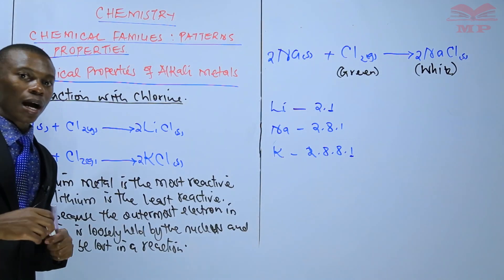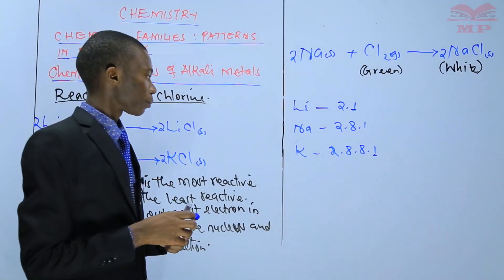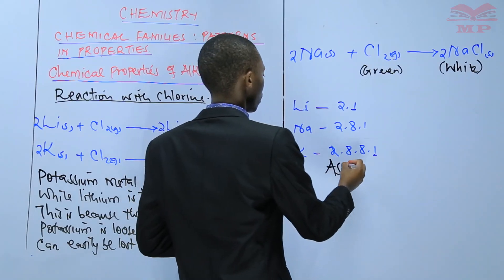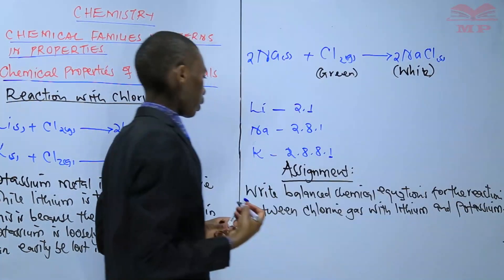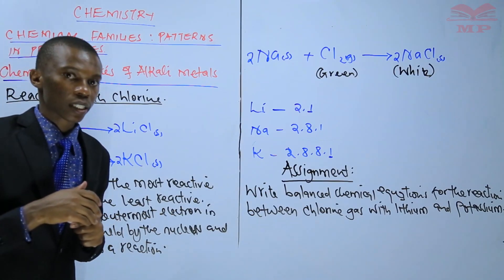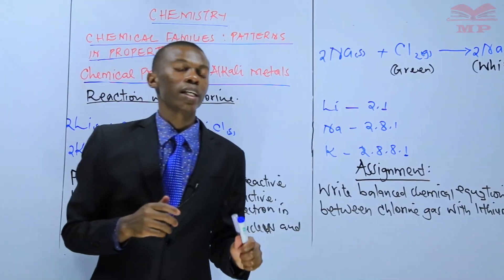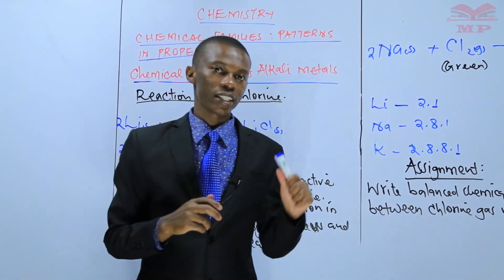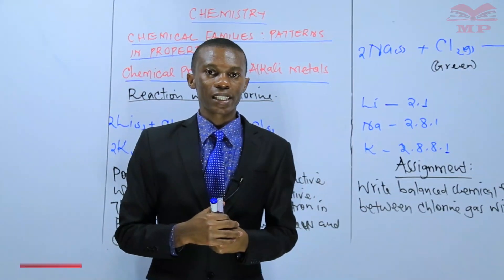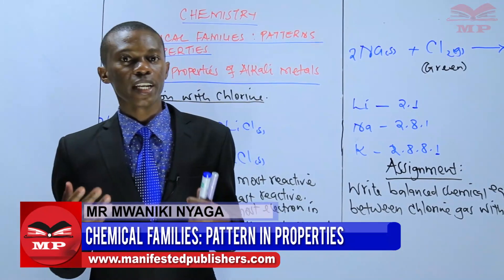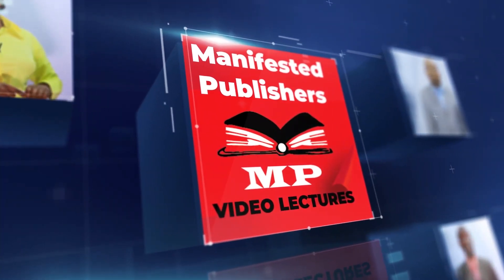That is how alkali metals react with chlorine gas. For your assignment, write balanced chemical equations for the reactions between chlorine gas with lithium and potassium — I expect two chemical equations. Ensure you have done that before we meet in the next lesson. The next lesson, we will be discussing the similarity between ions and compounds of alkali metals. See you in the next lesson.